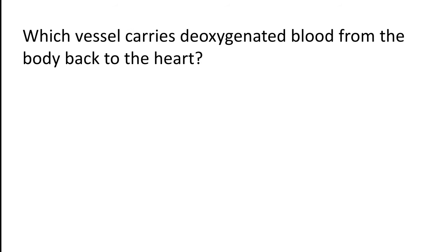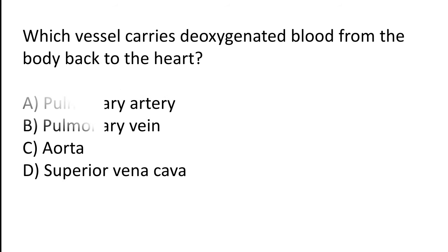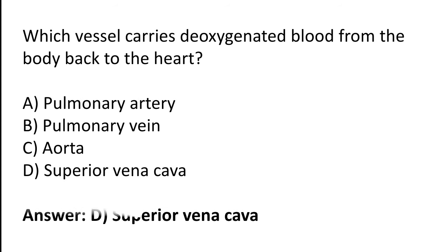Which vessel carries deoxygenated blood from the body back to the heart? (a) Pulmonary artery, (b) pulmonary vein, (c) aorta, (d) superior vena cava. The correct answer is option D. The superior vena cava carries deoxygenated blood from the body back to the heart.